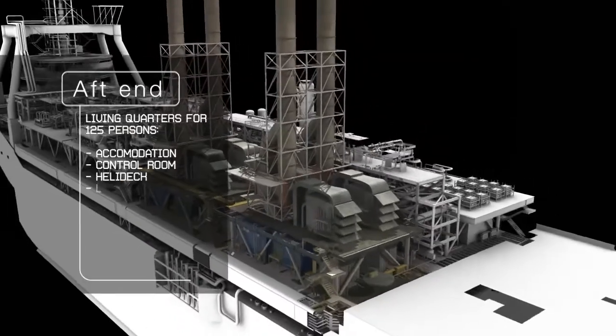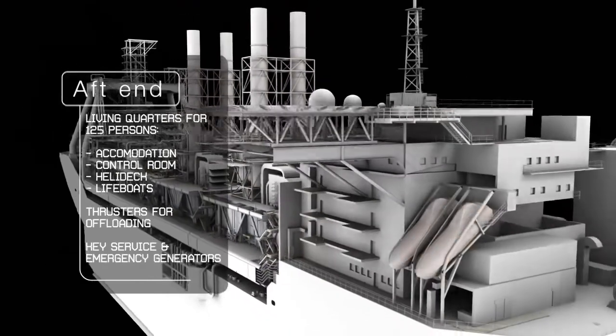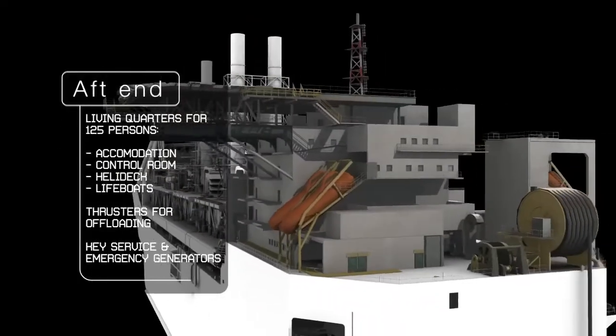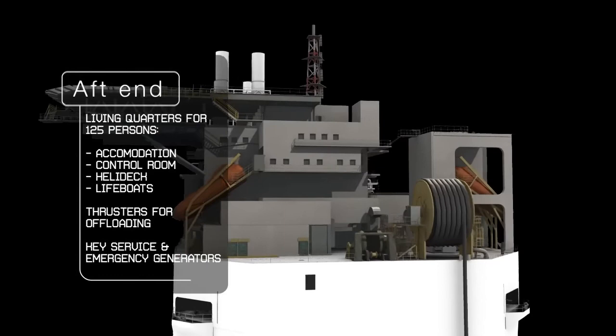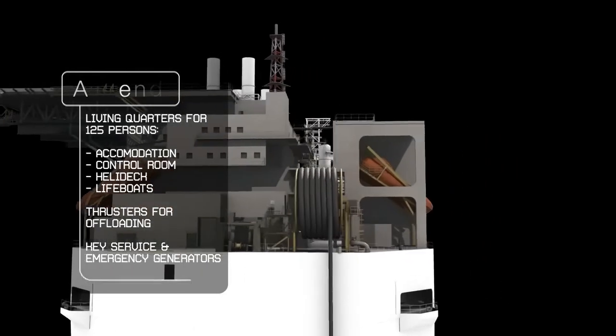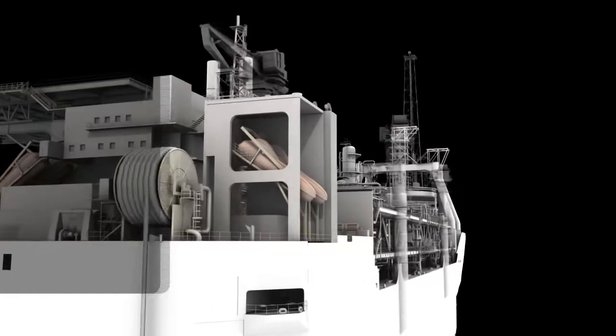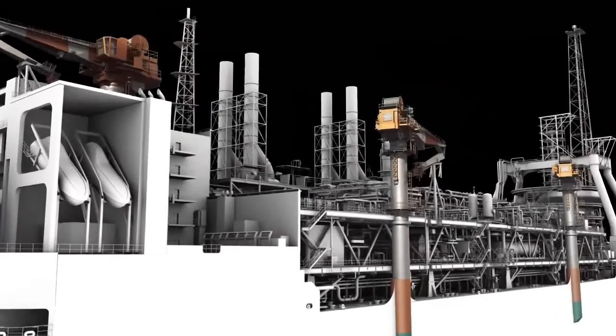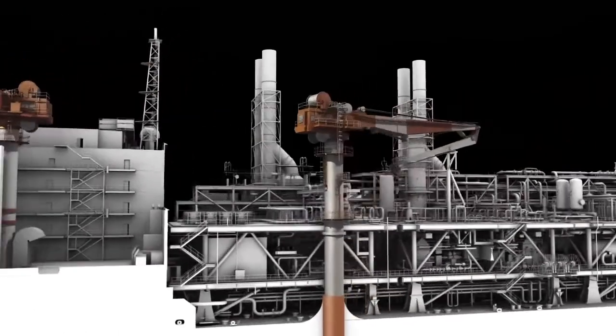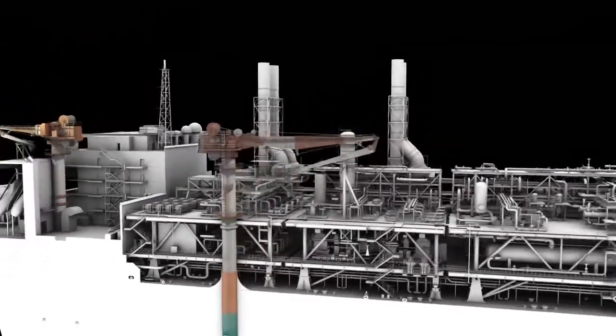The aft end of the vessel is where the accommodation module for 125 people is located. This includes lifeboats and the helideck. Also in this area is the control room, workshops, and vital control and electrical equipment. The vessel will have two main cranes that will cover the full length of the topsides.